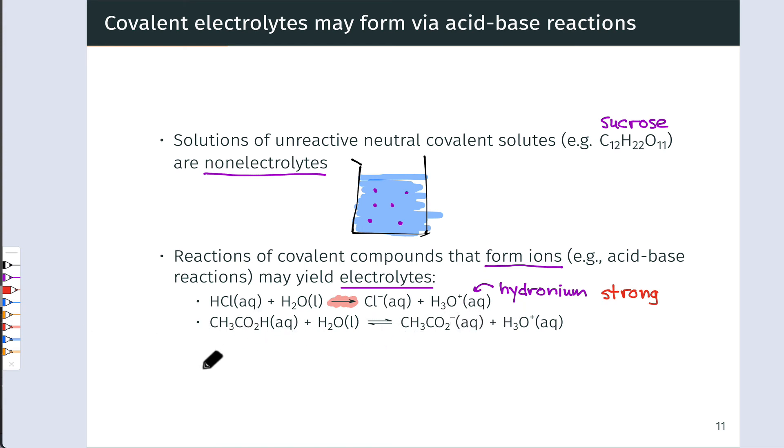Acetic acid, which is the second example here, reacts with water only reversibly, incompletely, in other words. And that's indicated by this reversible reaction arrow. What this means is that while acetic acid forms ions in water to some extent, it doesn't do so completely. And so this has a relatively small concentration of dissolved ions in solution. Many, many more of the dissolved molecules are neutral. And in this case, we're looking at a weak electrolyte solution.